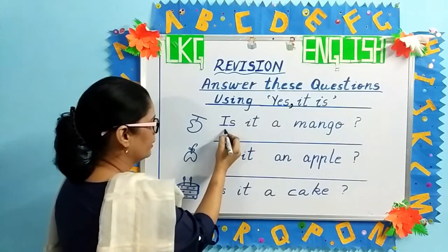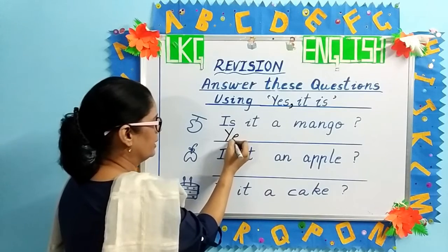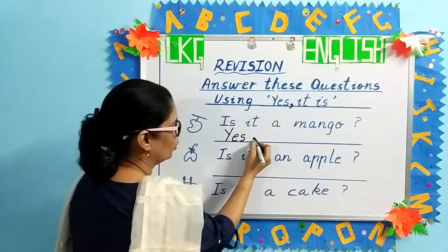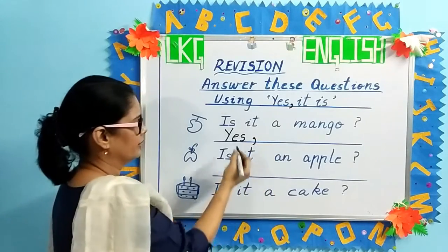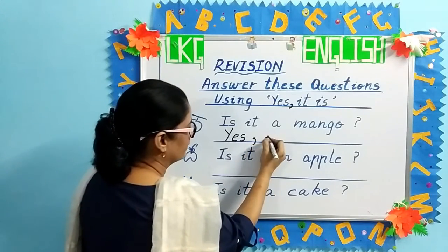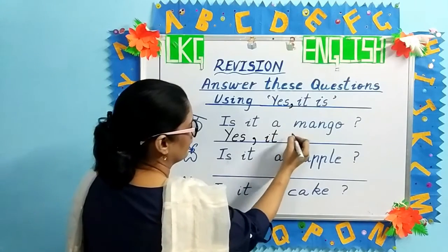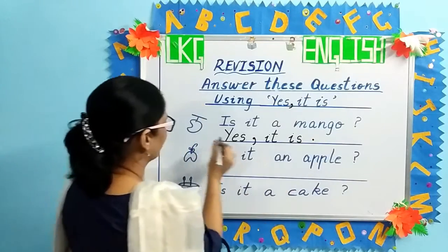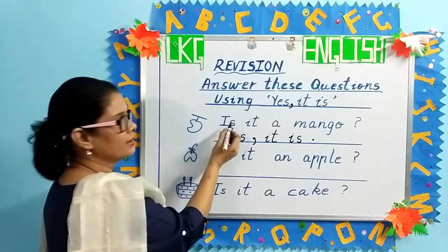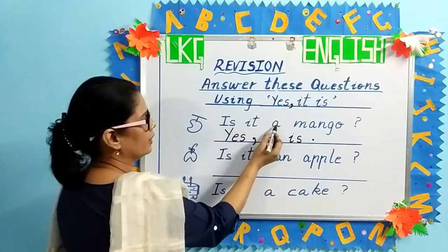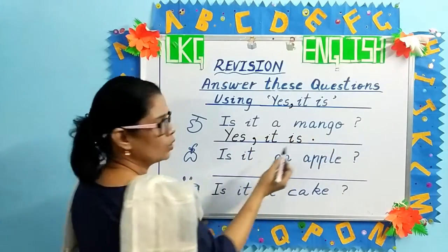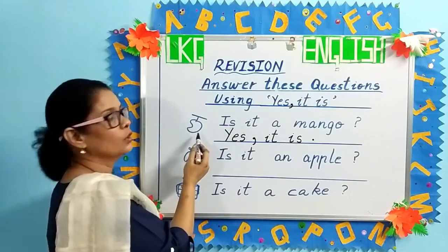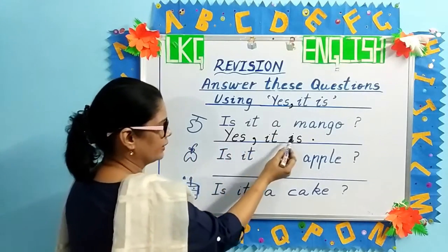So you will write: capital Y, E, S — yes. Put a comma — dot and a small tail. Yes, I, T — it — I, S — is — and put a full stop. Is it a mango? Yes, it is. The next one: what is this picture? Apple. Is it an apple? Is this picture an apple? Yes, it is.